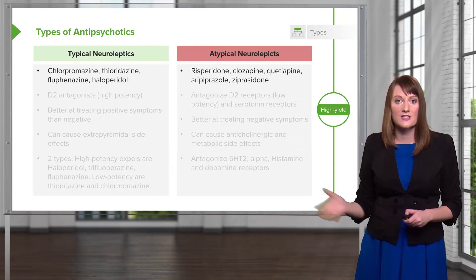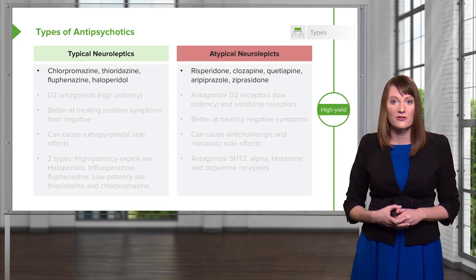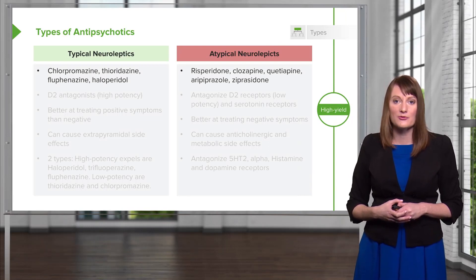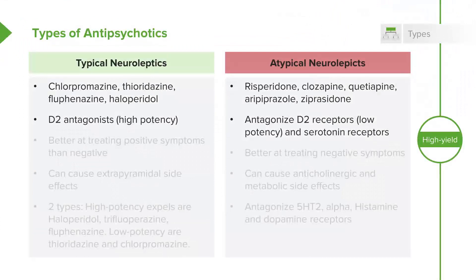Examples of typical neuroleptics include chlorpromazine, thioridazine, and haloperidol. Atypical examples are things like risperidone and ziprasidone. The typical neuroleptics are D2 dopamine antagonists and have a pretty high potency. Atypical neuroleptics do antagonize dopamine D2, however they have lower potency for that and they also target serotonin and histamine receptors as well.